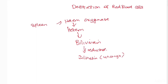In order for bilirubin to be excreted it has to be conjugated, and this occurs in the liver. The unconjugated bilirubin binds to albumin — the main protein carrier of the blood — which transports it to the liver.